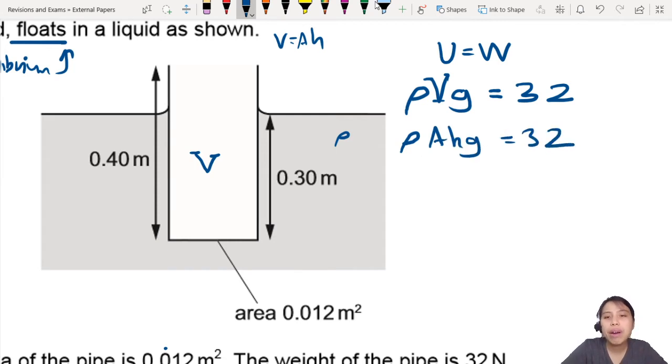But now we are in another dilemma. Which height do we use? When we say volume, is it the volume of the whole thing like that, or is it the volume of the part that is submerged? This part. So actually, you want to talk about the volume that is submerged over there.